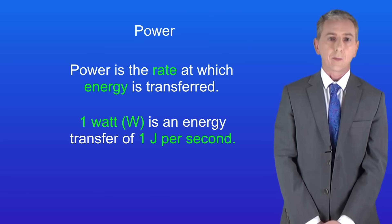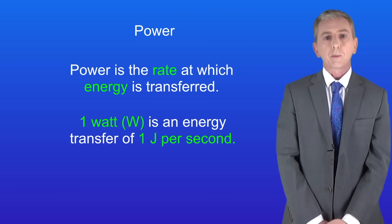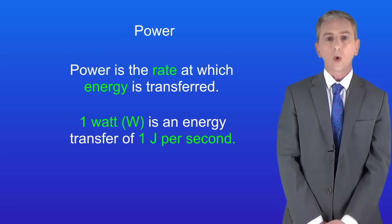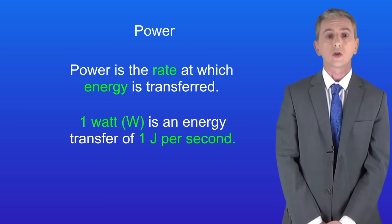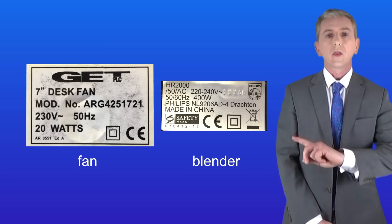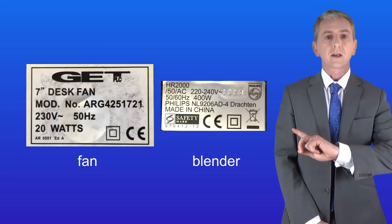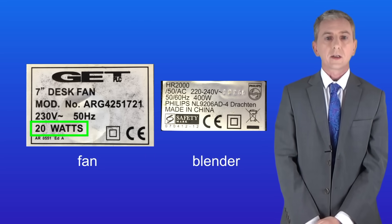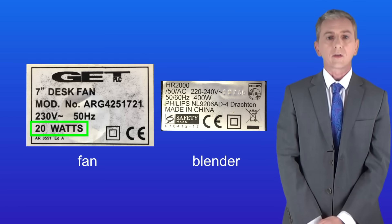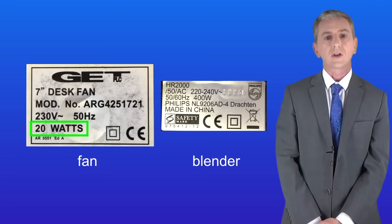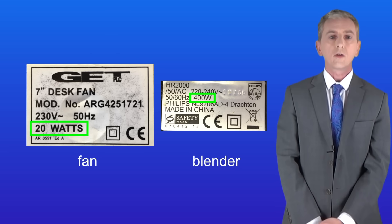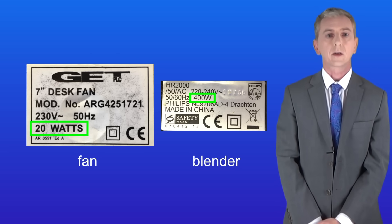All appliances have a power rating. Remember that power is the rate at which energy is transferred, and a power of one watt is an energy transfer of one joule per second. These are the power rating labels for the fan and the blender. The fan has a rating of 20 watts, so it transfers 20 joules of electrical energy every second. The blender has a power rating of 400 watts, so it transfers 400 joules of electrical energy every second.